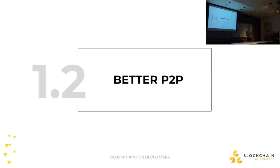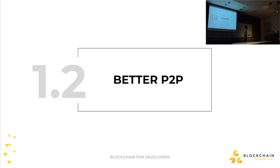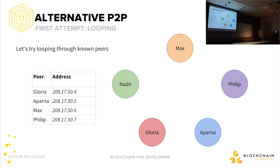Let's focus on a better P2P system — one with no central point of failure. What's a huge example of a decentralized P2P system we've been talking about in this class? Blockchain! Blockchain is the better P2P system here. But there are other models — blockchain isn't the only one in the space.